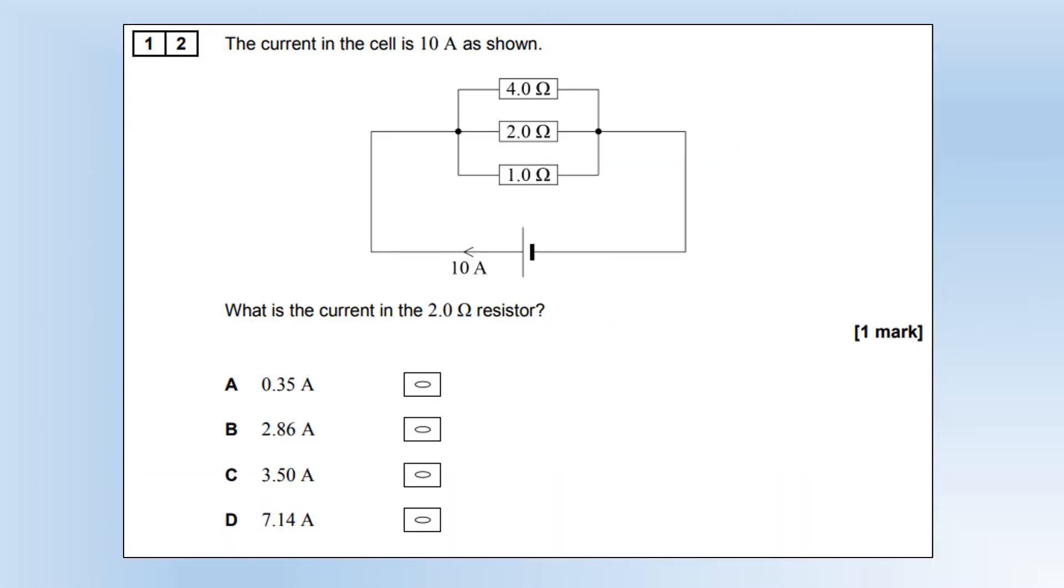The current in the cell is 10 amps, as shown. What is the current in the 2 ohm resistor? I'm going to approach this by figuring out what the potential difference is, by working out the total resistance, multiplying it by the current to get the potential difference, then using Ohm's law to figure out the current, giving us option B.